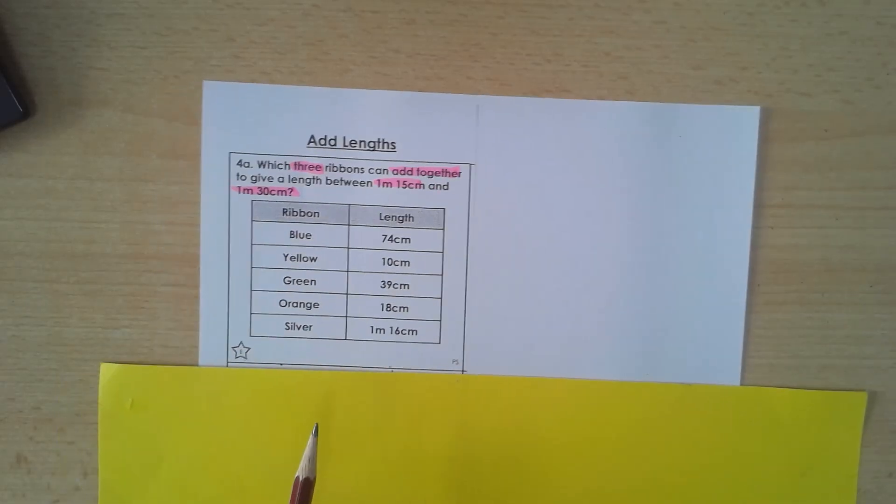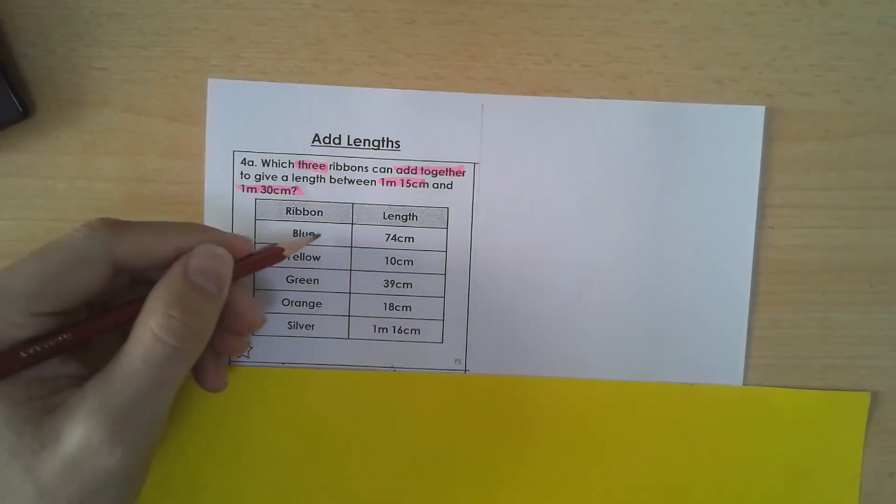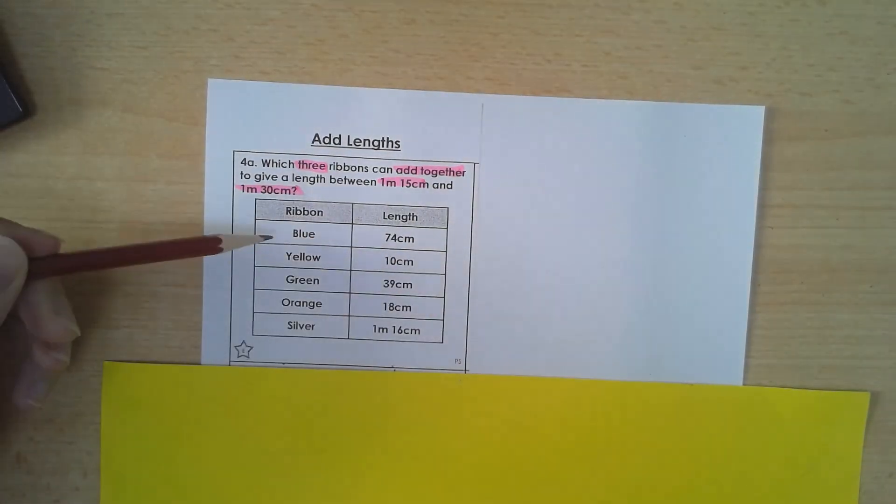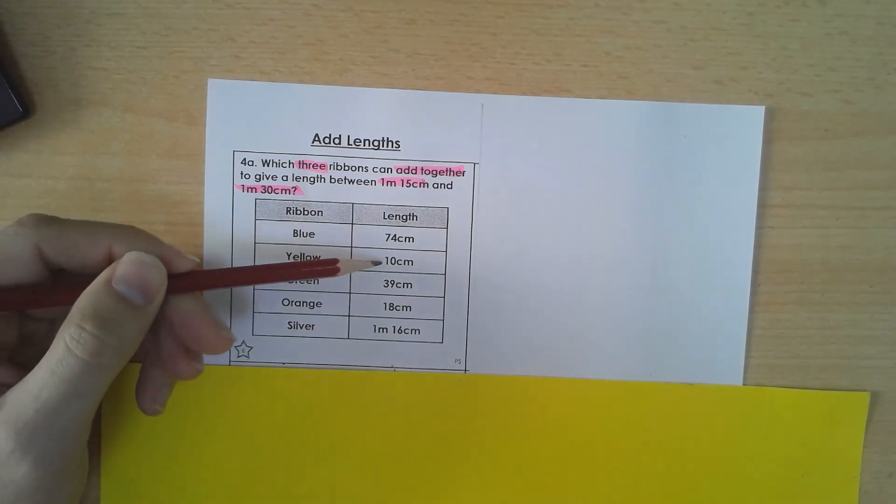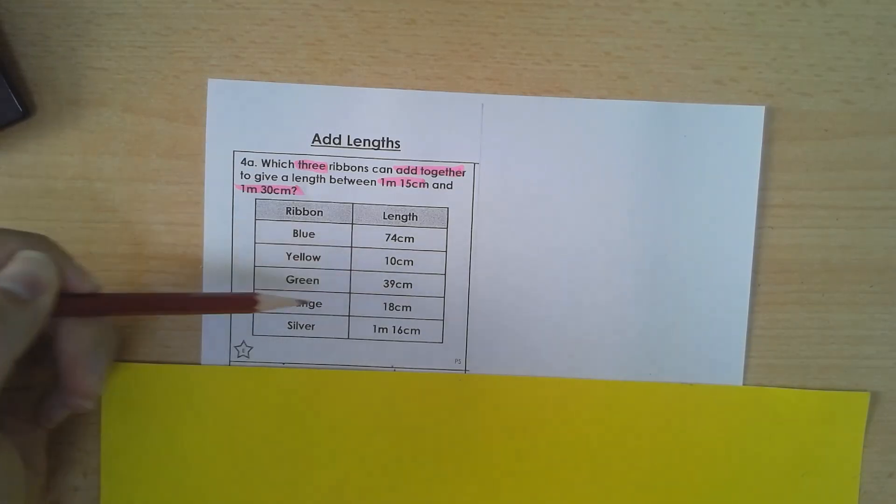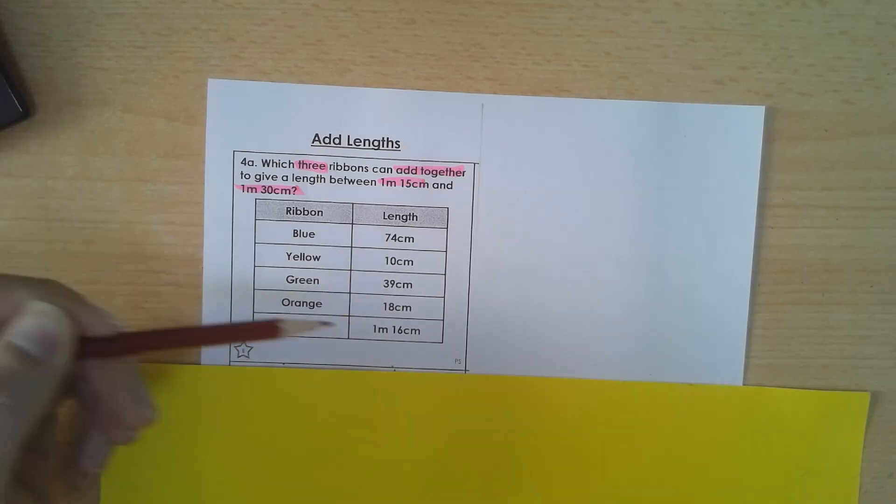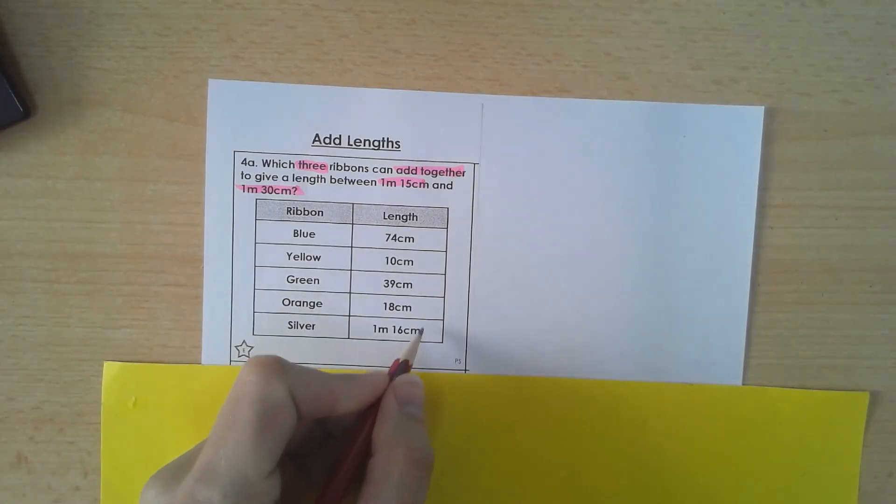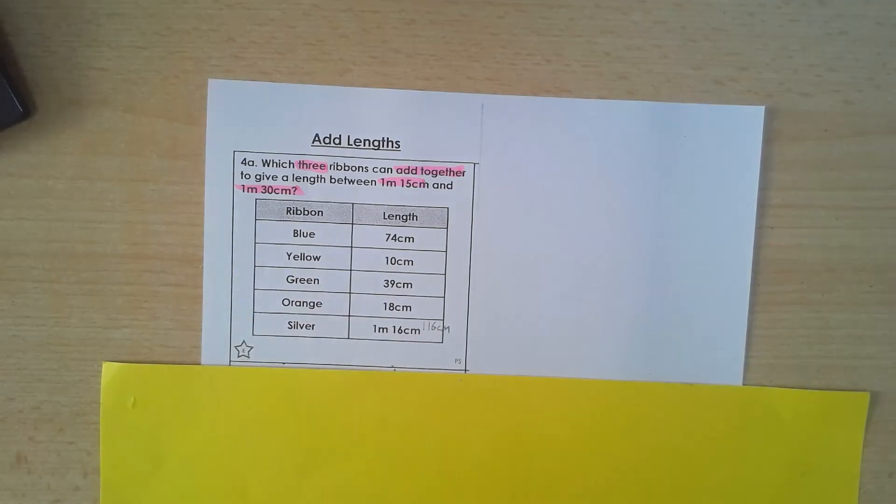So looking at the different ones we've got here in the table, we've got a blue ribbon, here's its length, yellow ribbon and its length, green and its length, orange and its length, silver and its length, which is slightly different. So I'm just going to put that as 116 centimetres there, just so that it's converted.